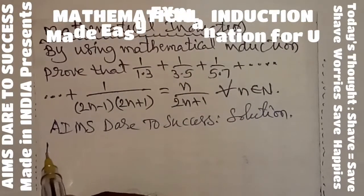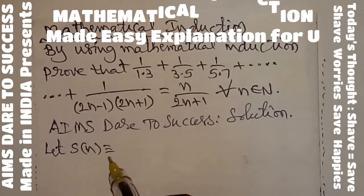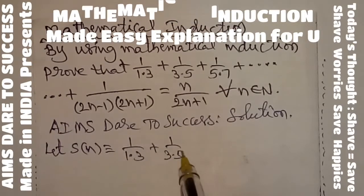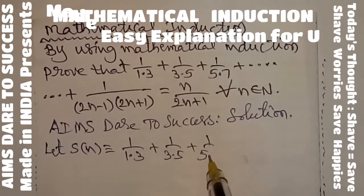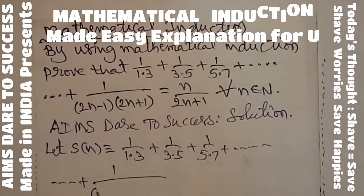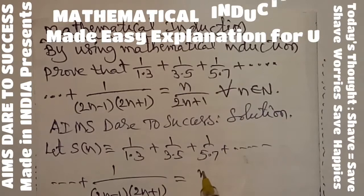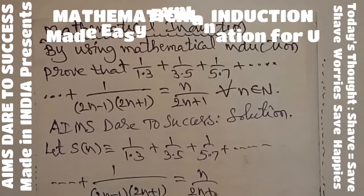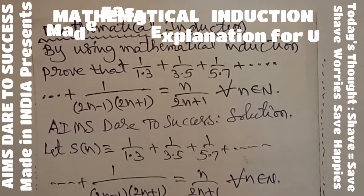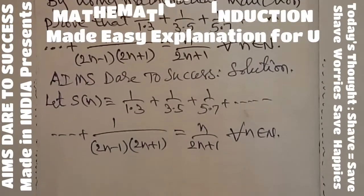So the complete statement you can write as: let S(n) = 1/(1×3) + 1/(3×5) + 1/(5×7) + ... + 1/((2n−1)(2n+1)) = n/(2n+1) for all n belonging to ℕ. Write the complete given statement S(n) after getting the nth term.